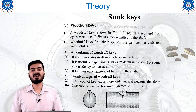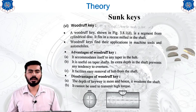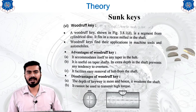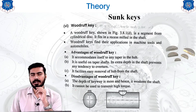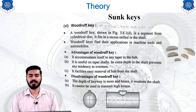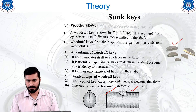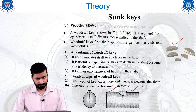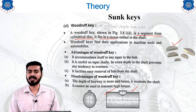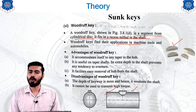Another type of sunk key is the Woodruff key. A Woodruff key has a cross section like a cut part of a circular disc. It is a segment from a cylindrical disc and fits into a recess made in the shaft. Woodruff keys find their application in machine tools and automobiles.